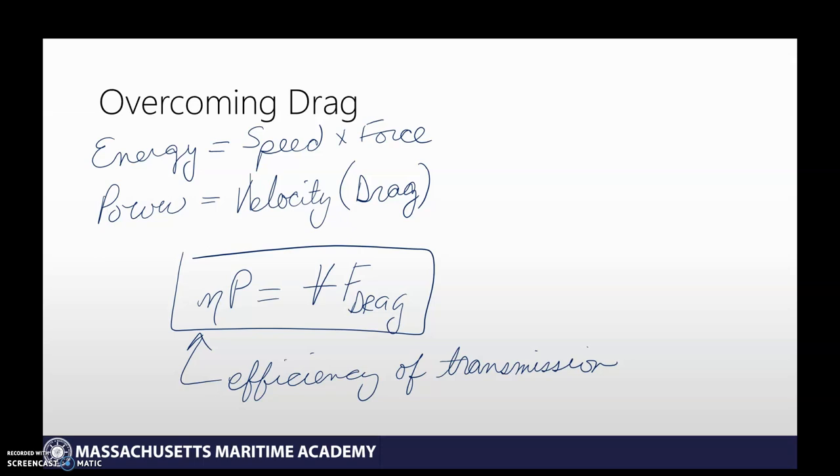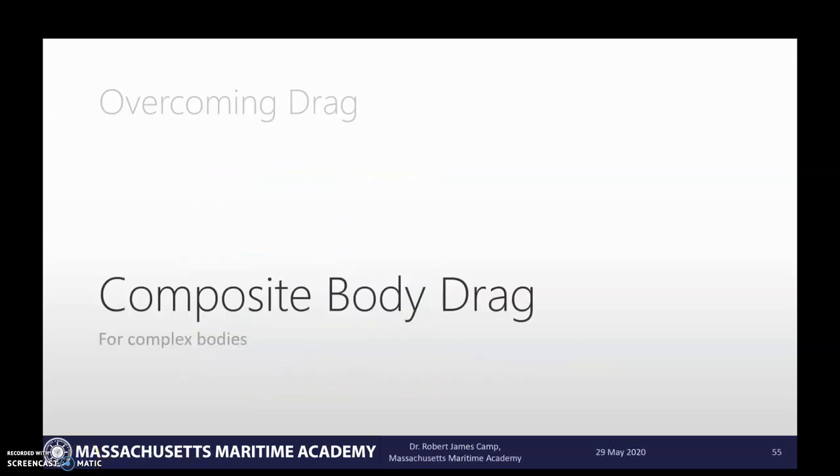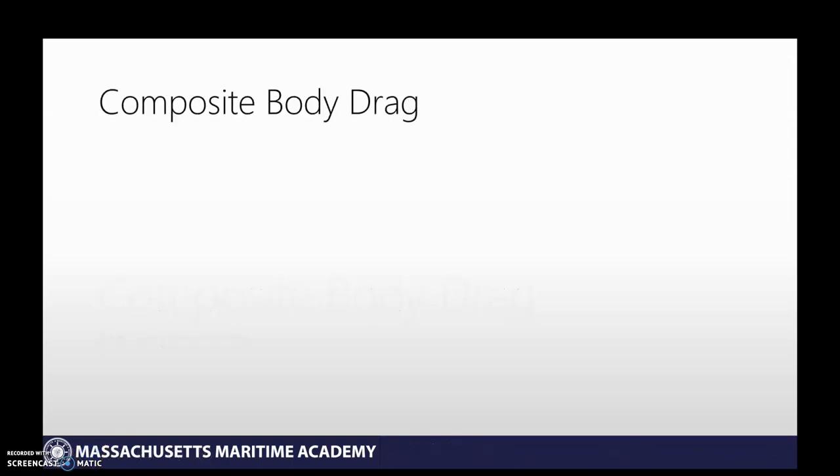And since that was a really short topic video, the next one's a really short one. Let's just put them together all in one video and let's talk about composite body drag. Now the question is, how do we figure out—we've talked about okay, we've got this plane: the wings have drag, the body has drag, the tail has drag—how do we do it? We use what's called composite body drag, which is basically superposition for fluids.